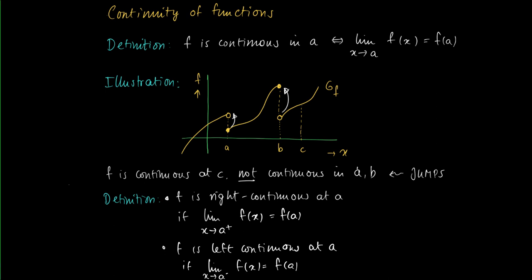Now try to answer whether or not the function is left continuous at a or right continuous at b. We have that f is right continuous at a and left continuous at b.